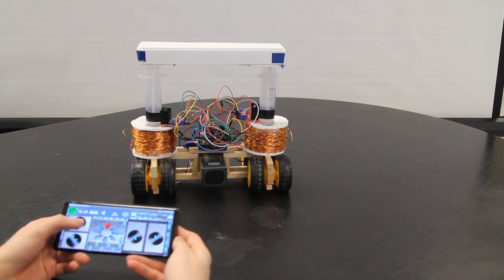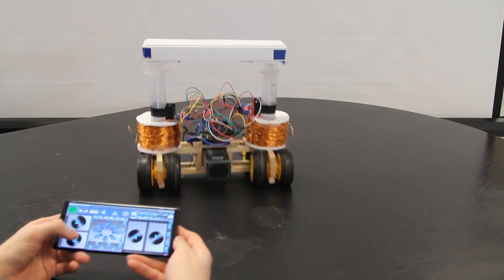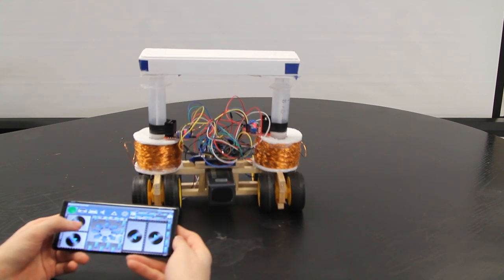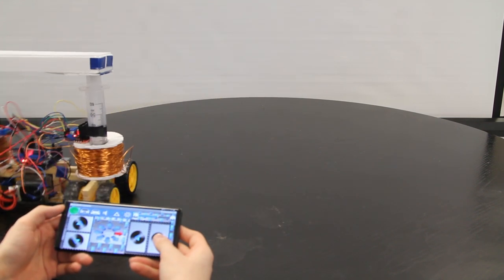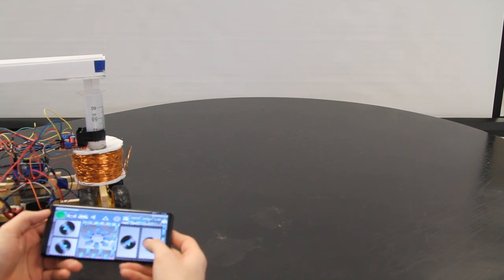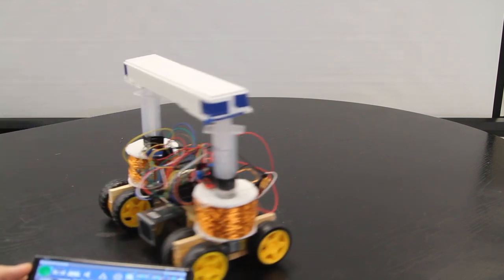As you can see, our model acts according to the indicators on the application. When we press the upper button, the model goes forward and for the lower button, the model goes backward. And for the right and left-hand side buttons, our model rotates accordingly.